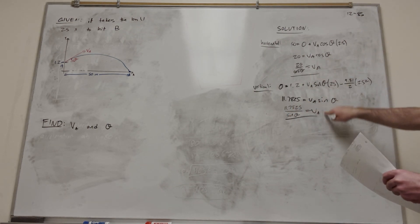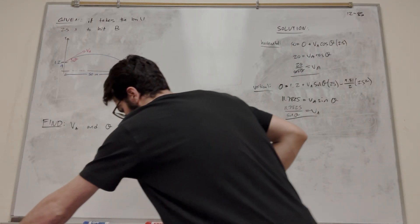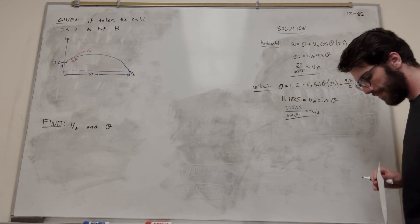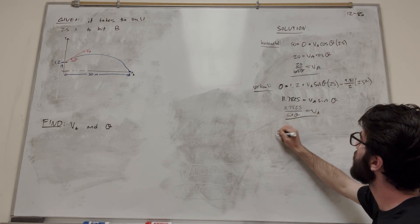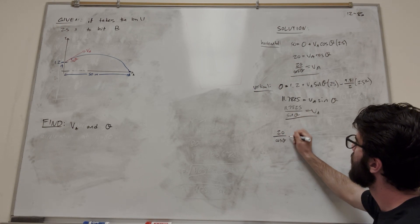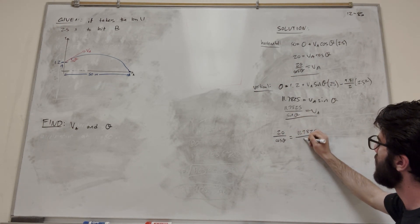So now we have two equations in terms of VA. And what we're going to do is set them equal to each other. And that's going to get rid of one of the unknowns. So again, just solve for theta. So set these two equal to each other. Let's put this one in the row. 20 over cosine of theta is equal to 11.7825 over sine of theta.